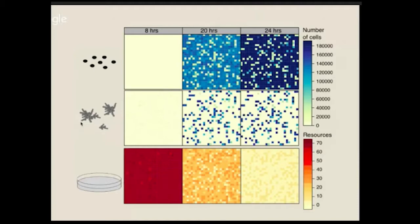Although at first it seems that the two types of cells are growing at the same rate — and even that the multicellular cells might be growing faster — in the end it's discovered that the unicellular cells are the ones that continue to grow because they still have access to their resources. The multicellular cells, although growing faster because there are more cells in the cluster, consume all the resources available to them, which then slows down their growth rate.